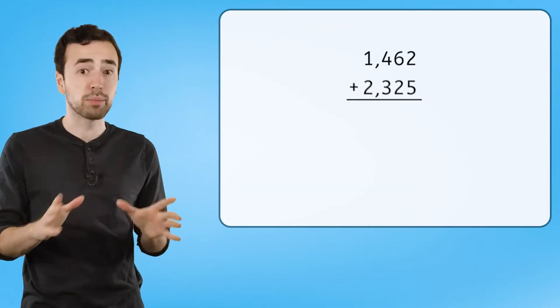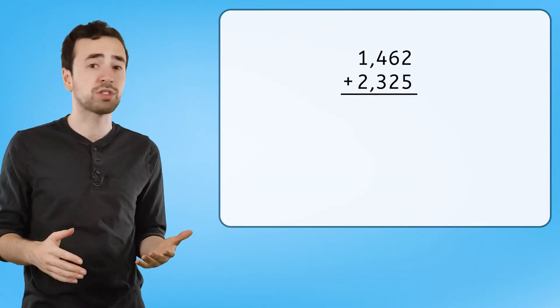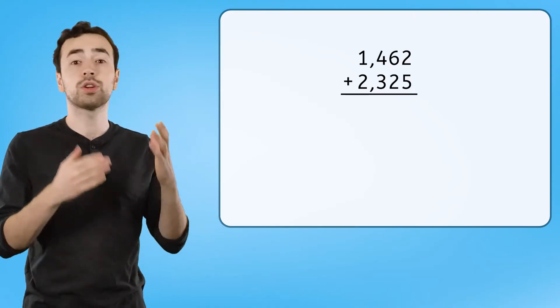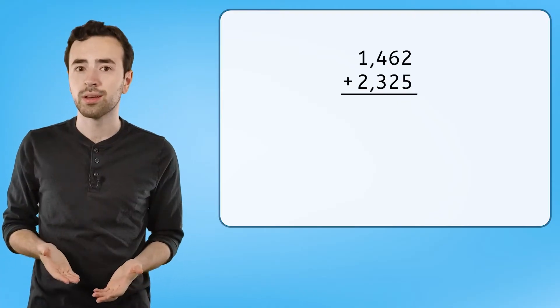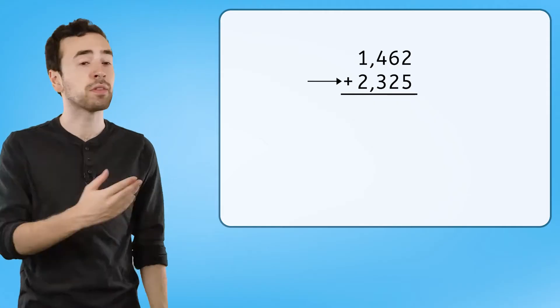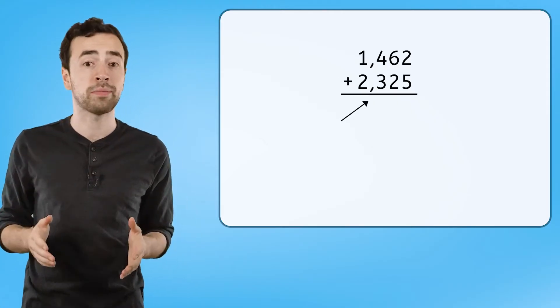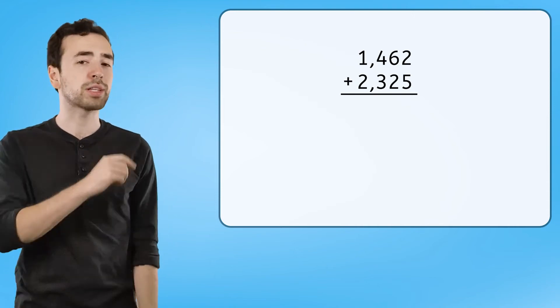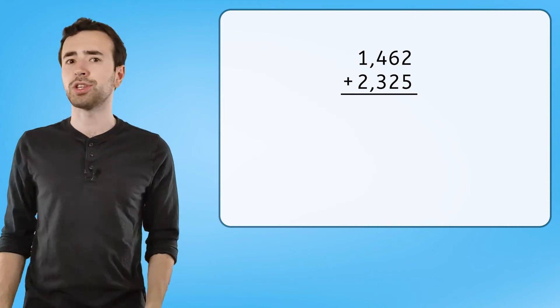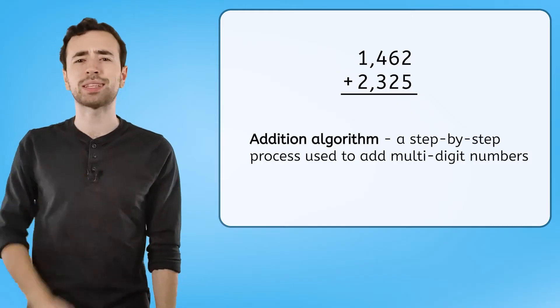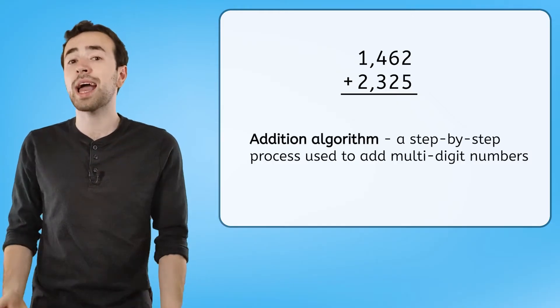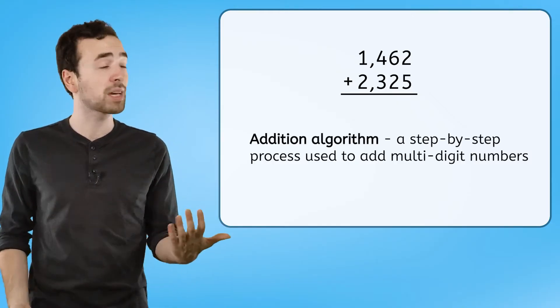Notice my numbers are still the same: 1,462 and 2,325, they're just arranged vertically. They also have a plus sign on the left side, and the equal sign is a long line along the bottom. Lining our numbers up in place value order like this makes it much easier to use the addition algorithm, which is a step-by-step process we use to add multi-digit numbers like these.